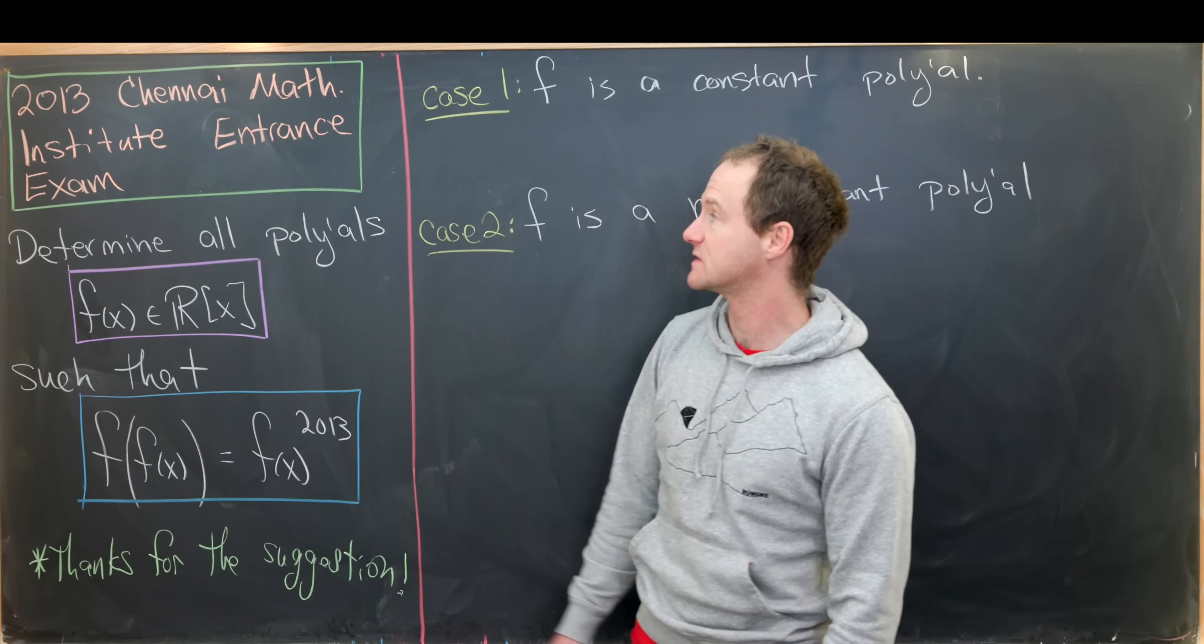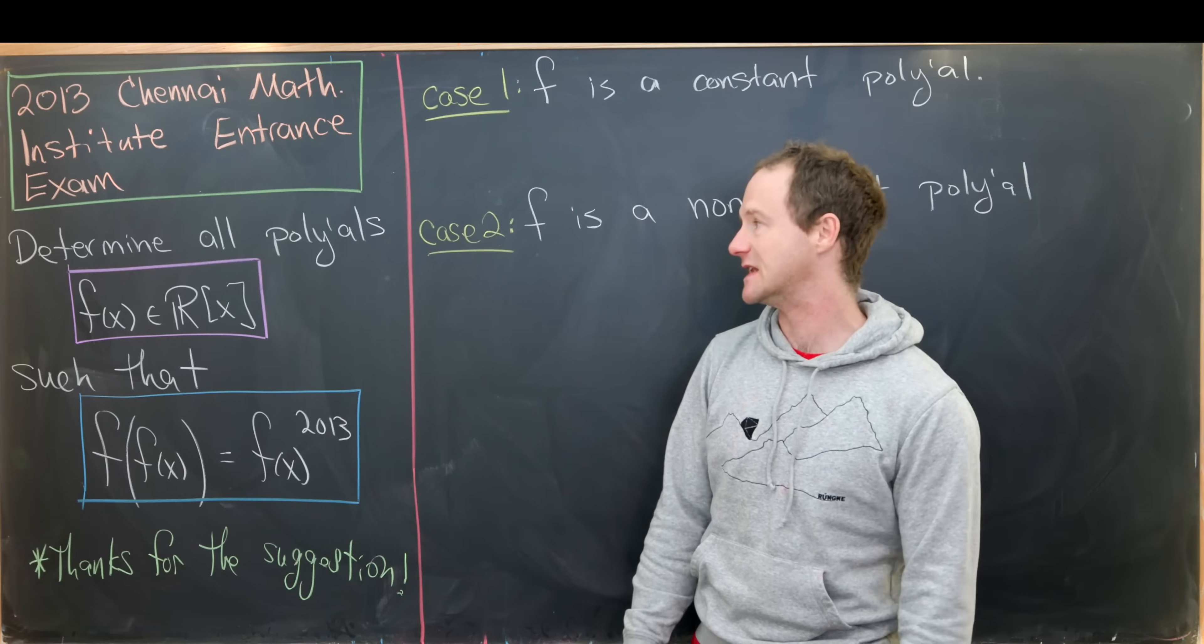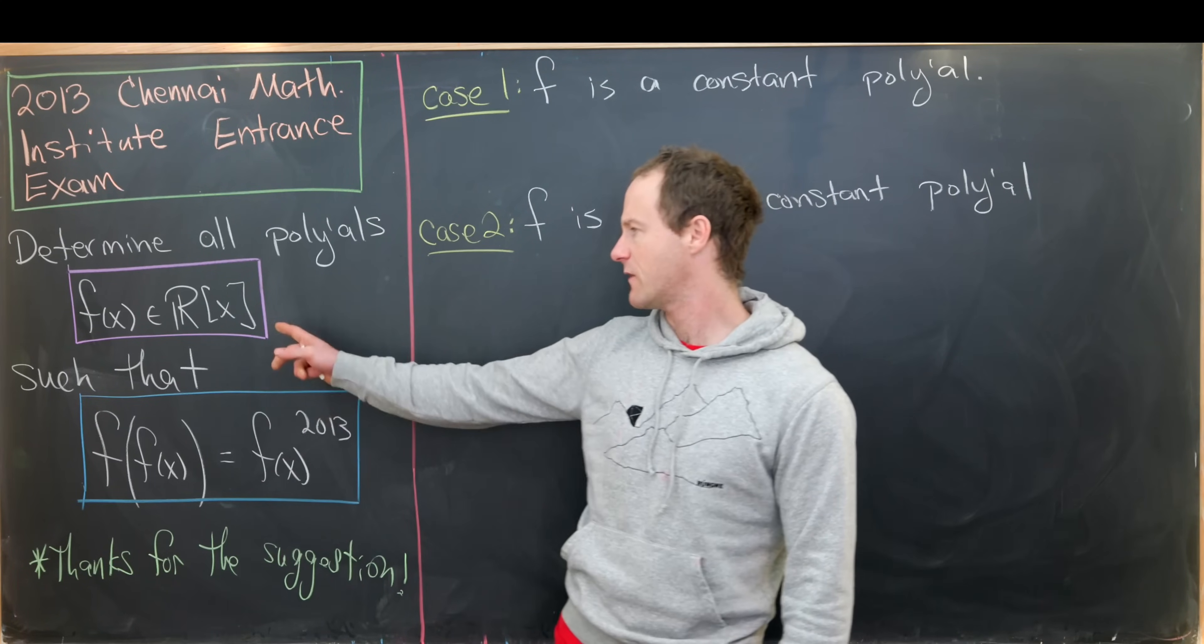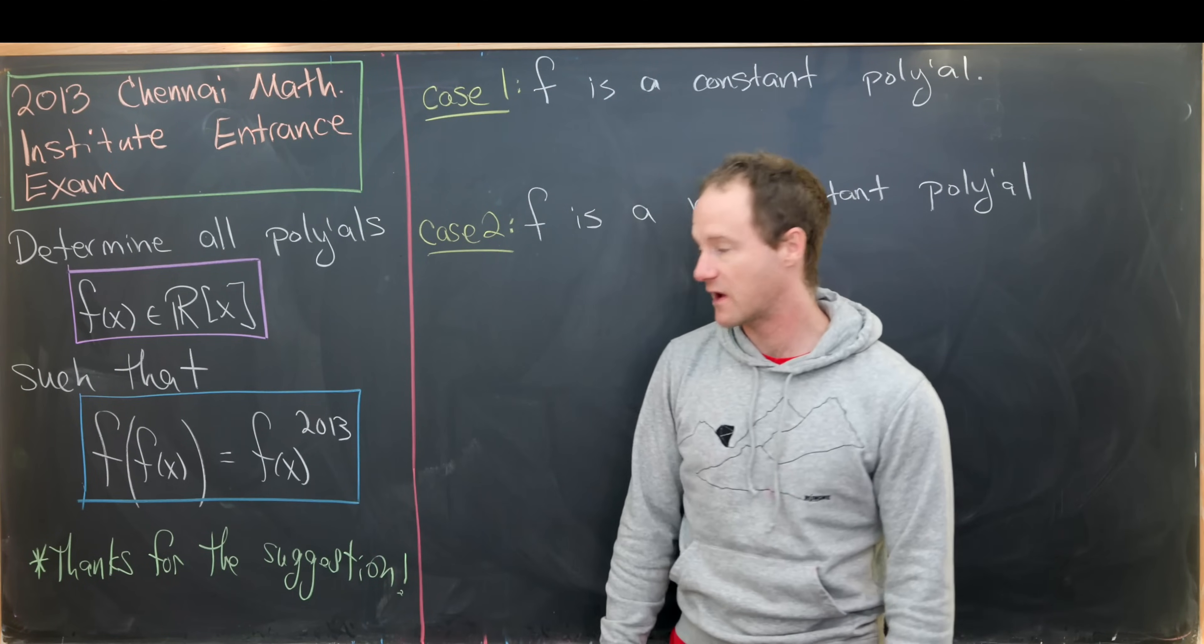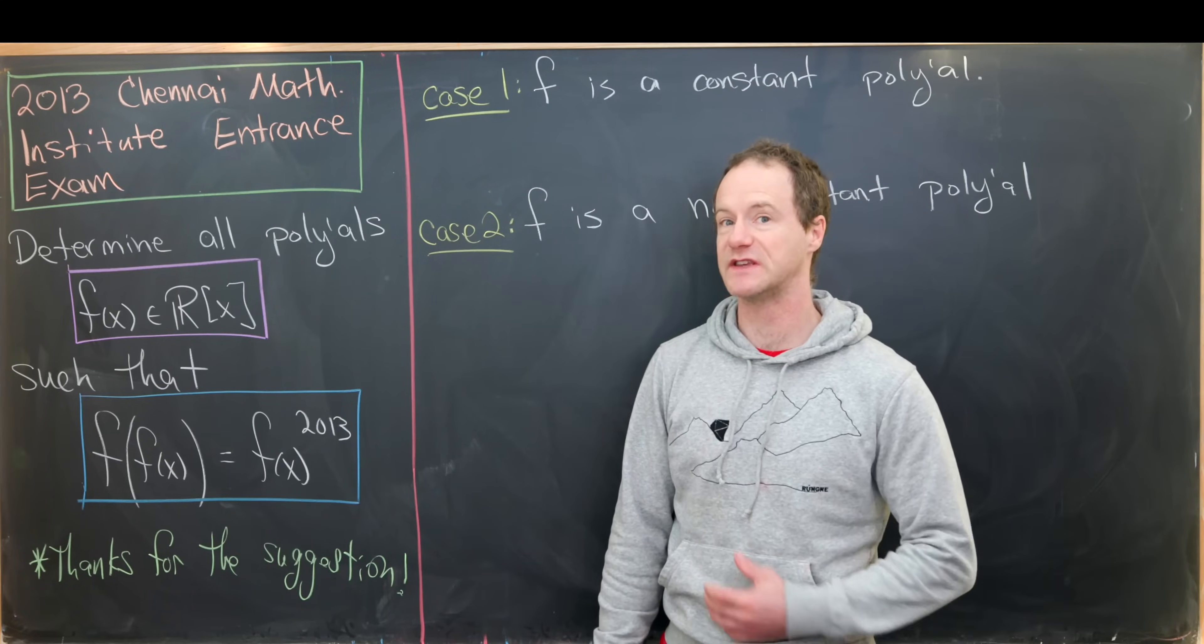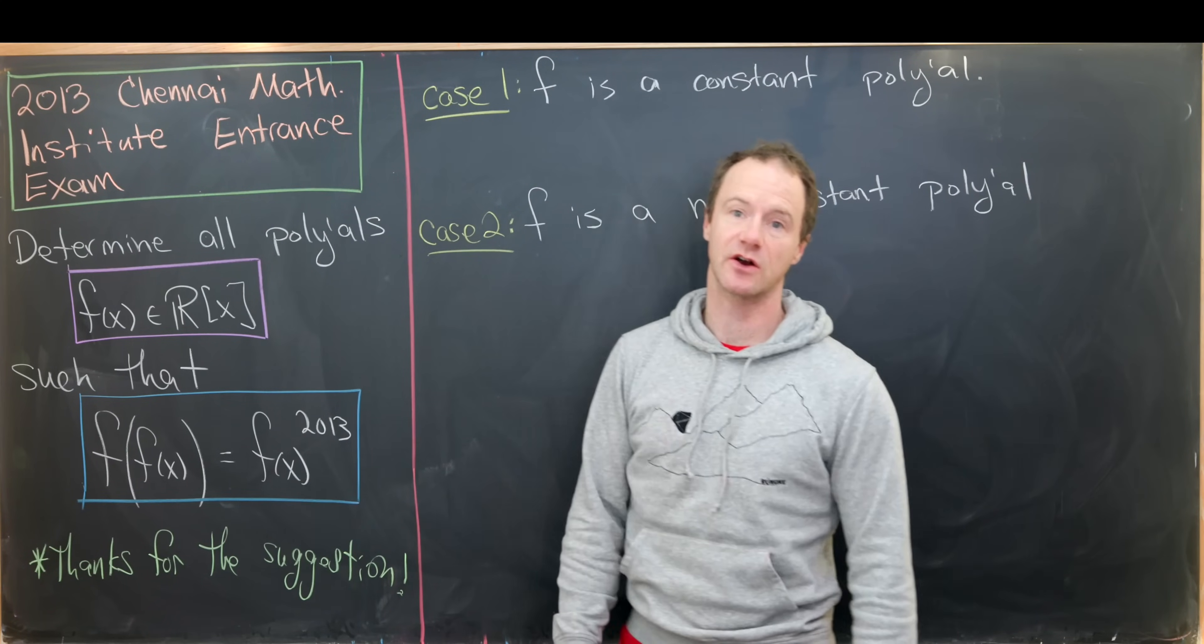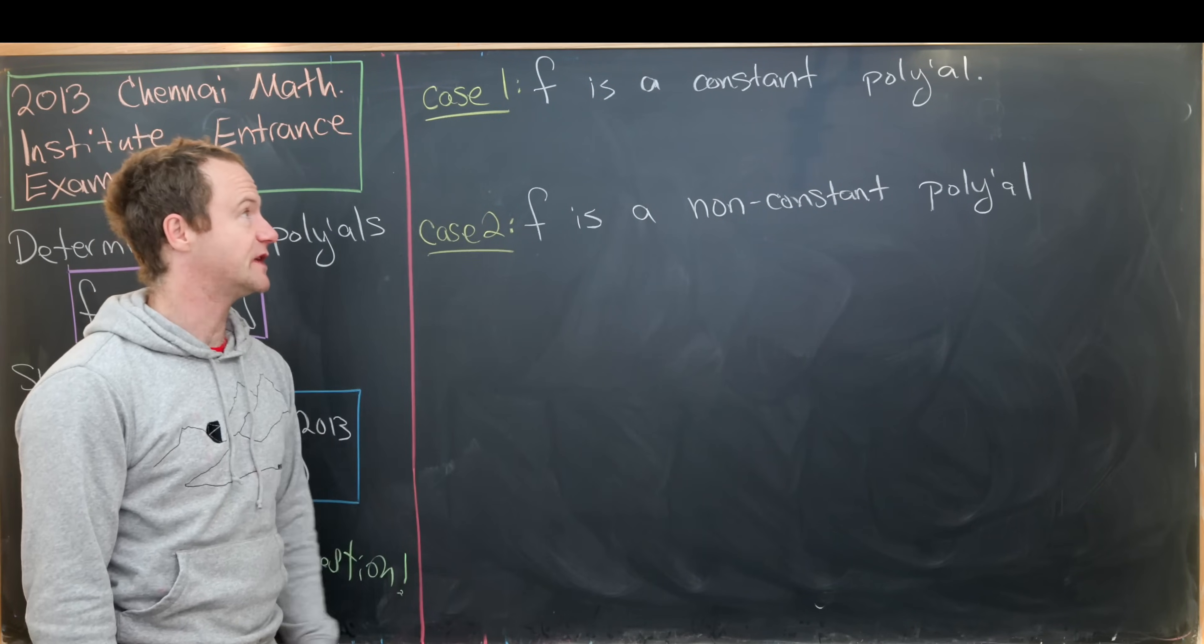This problem comes from the 2013 Chennai Math Institute entrance exam. This is a university in India and our goal is to determine all polynomials with real coefficients. So I've written that as f of x is in R adjoin x, satisfying the following functional equation. We have f composed with itself, in other words f of f of x, equal to f of x to the 2013 to match with the year. This is a fairly short problem but I like it and we're going to break it into two cases.